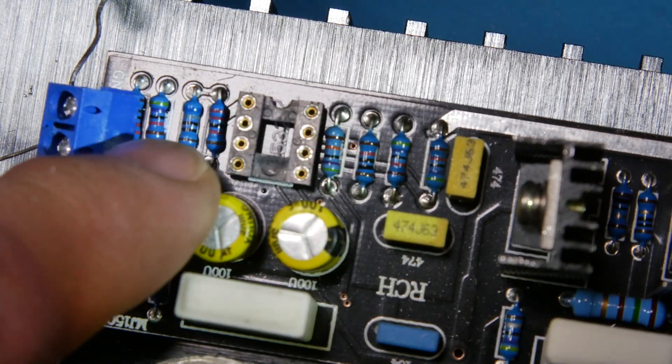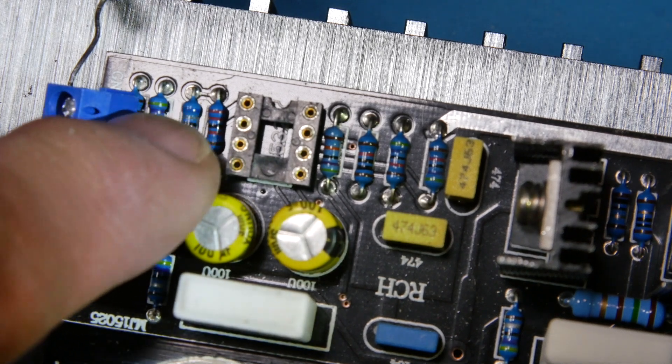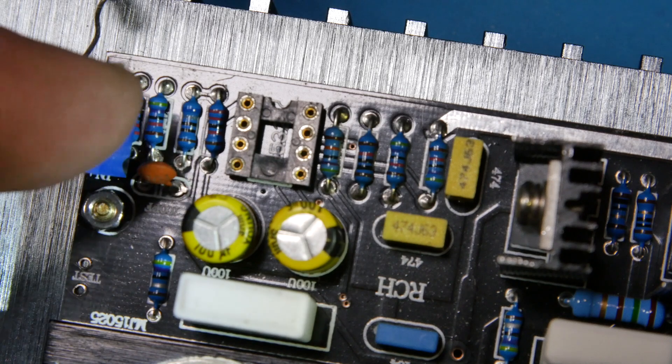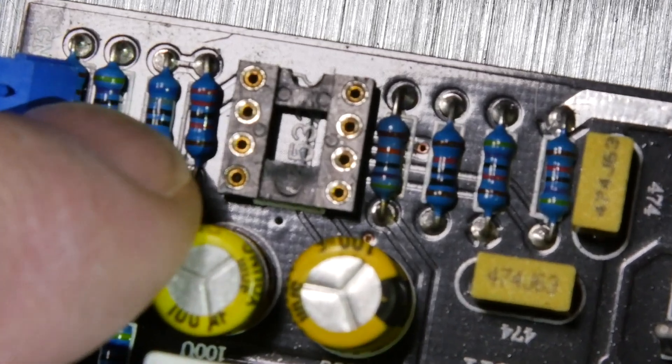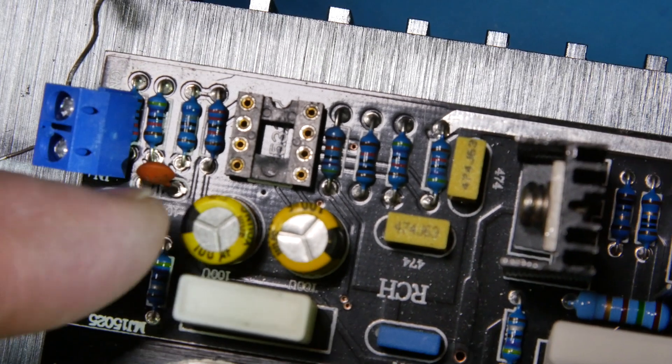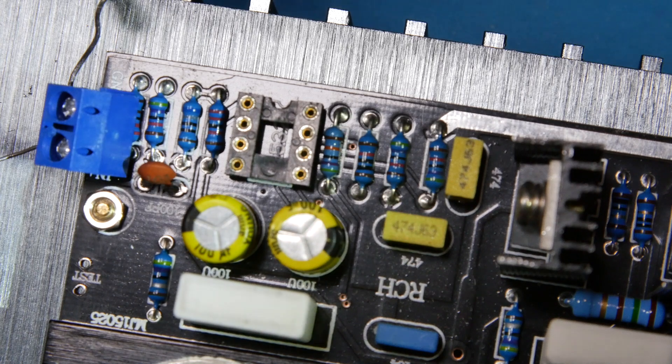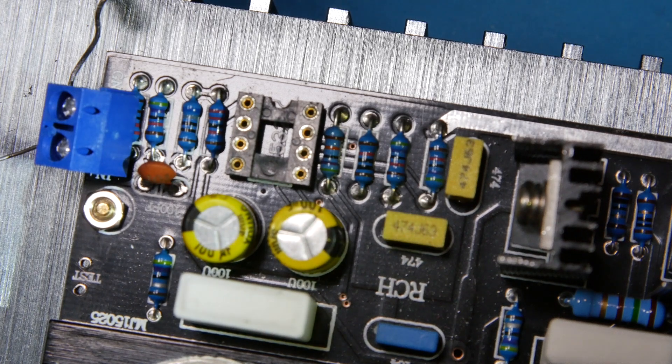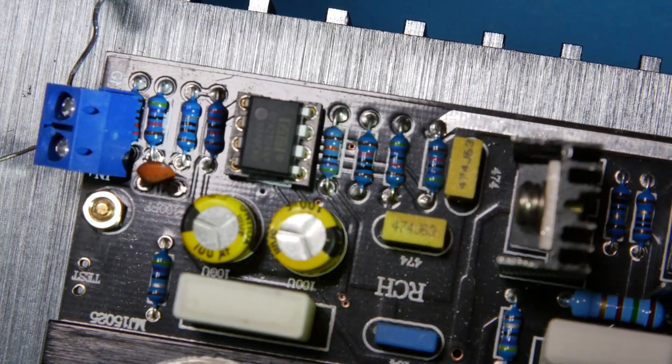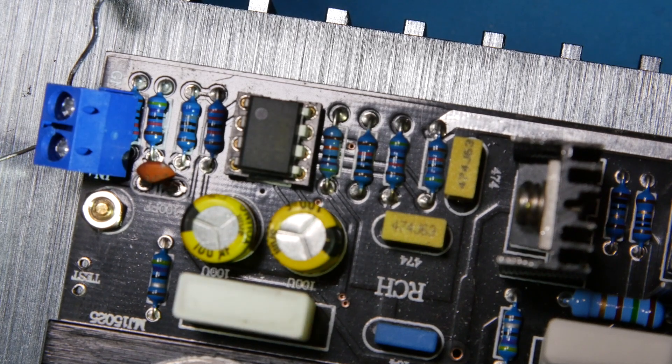And, you can see how this socket is actually made with what we call machine sockets. They're just round, nice barrels. I think they're gold plated. Unlike some of the less expensive ones, they're more of a leaf spring. They're just pushing two sides. So, this is the nice type of sockets. Back in the days, we'd use them for military stuff. And, that's what it looks like installed. The Burr Brown part. It's the OPA 2604.